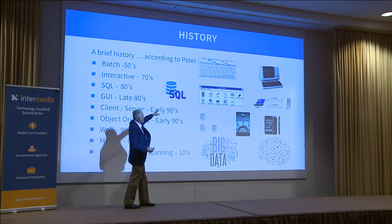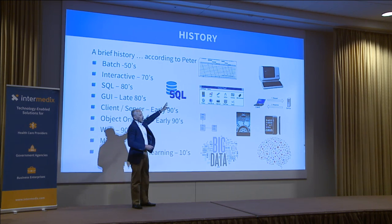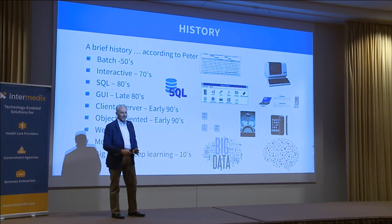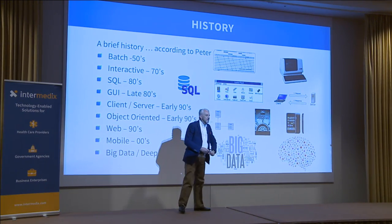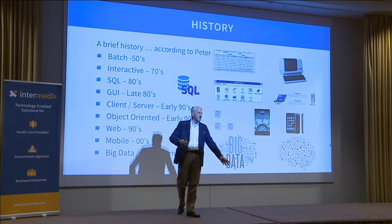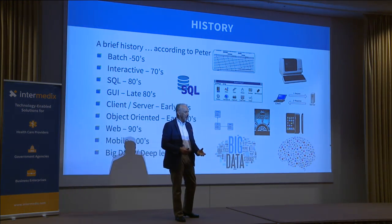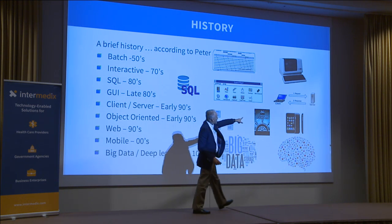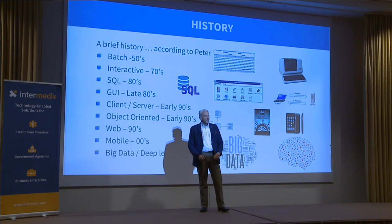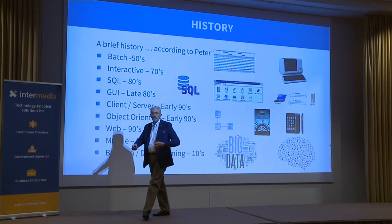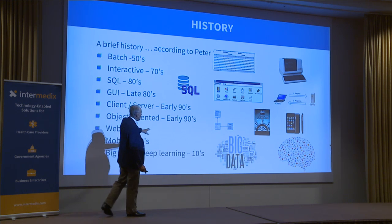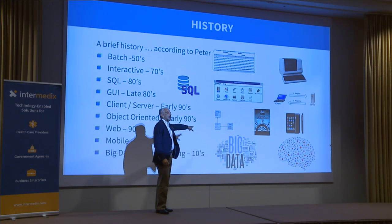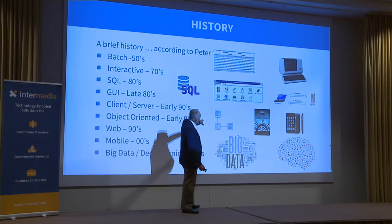Then in the 80s we got SQL, which became the most religious, righteous way to store data. We had graphical user interfaces — this is Windows 3.0. Once again, there was the religious argument whether a Mac was better than Windows. Then we got client-server, which we call distributed computing today. All of these things were going to be revolutionary, were going to be a change — they added to it. In the early 90s, we got object orientation, and my gosh, was that a war.